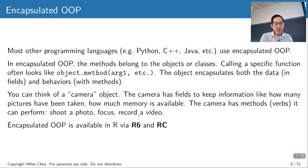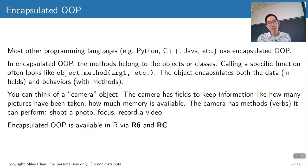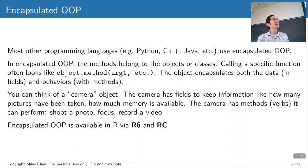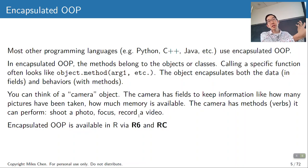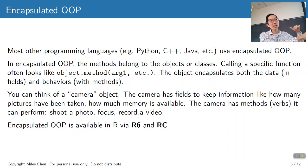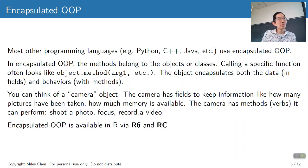There's a huge difference between encapsulated OOP and generic function OOP. Most other languages use encapsulated OOP — Python, for example. In encapsulated OOP, the methods belong to the objects or the classes. When you call a specific function, it looks like object.method with whatever arguments. In Python, you have lists with methods — if you wanted to add something to a list, you'd do list.append, like fruits.append('banana').